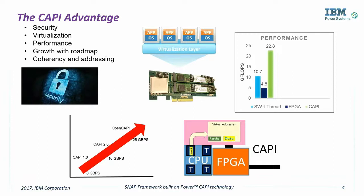Finally, the CAPI architecture makes it easier to program accelerators via coherency and virtualized addressing. The accelerator addresses match the application code and allows for data to be shared. With CAPI, the accelerator is another thread running on the server.